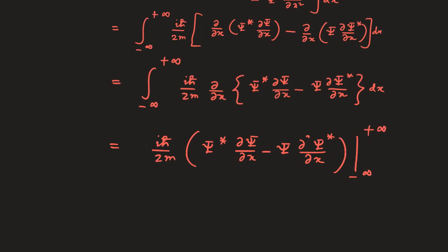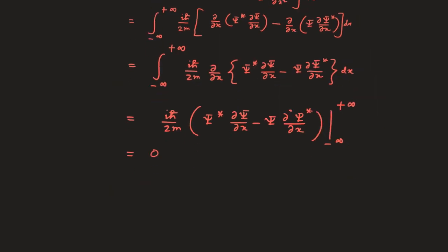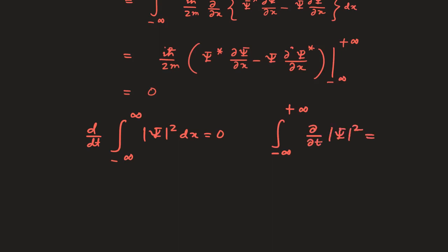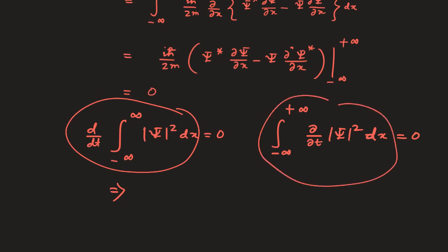Since the wave function must vanish at plus and minus infinity, this boundary term equals zero. We earlier showed that d/dt of the integral of |ψ|² dx must be zero, and now we have shown that the integral of del/del t of |ψ|² dx is also zero. Therefore, the derivative and integration commute in quantum mechanics.